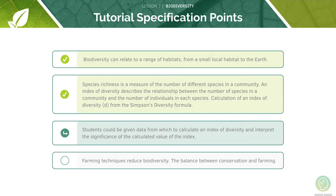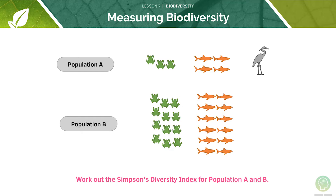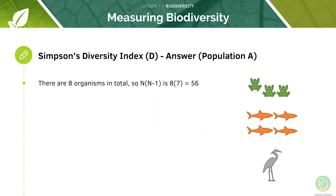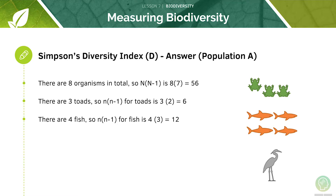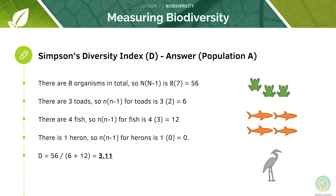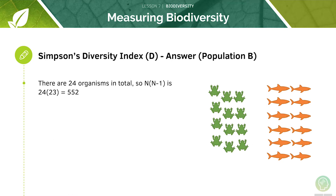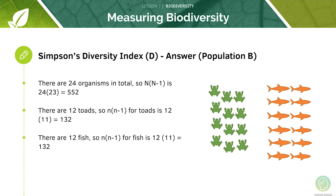Now let's look at interpreting the index of diversity — have a go at working out Simpson's diversity index for populations A and B. For population A there are eight organisms in total: three toads, four fish, and one heron, giving a Simpson's diversity index of 3.11. For population B there are 24 organisms in total — 12 toads and 12 fish — making the diversity index 2.09.